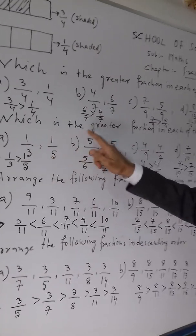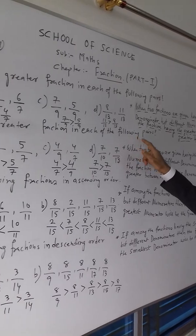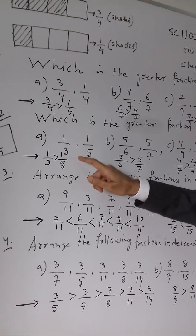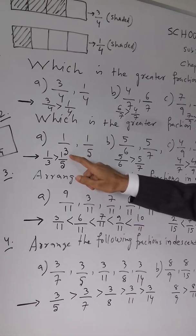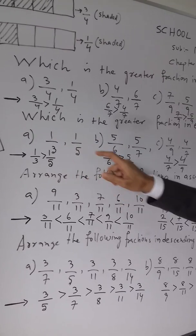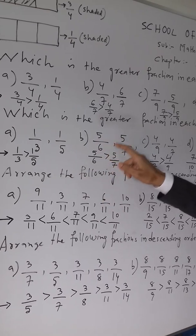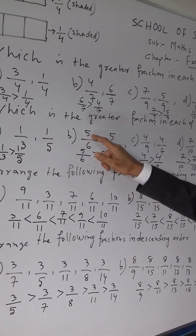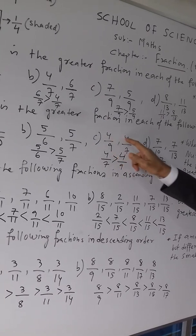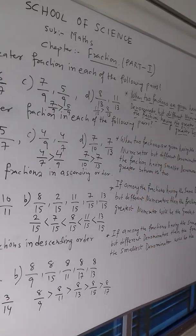Now the second one. Which is the greater fraction in each of the following pairs? Here the denominators are different: 1 by 3 and 1 by 5. But the numerator is the same. 5 by 6 and 5 by 7 — denominators are different, numerators are same. 4 by 9 and 4 by 7 — numerators are same, denominators are different.